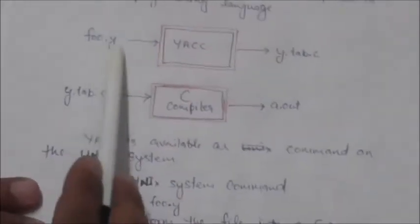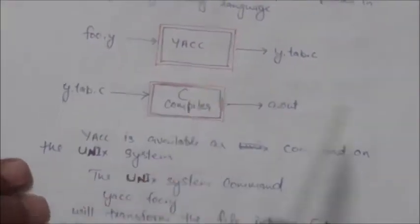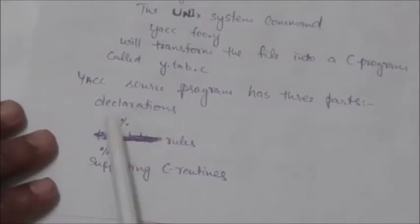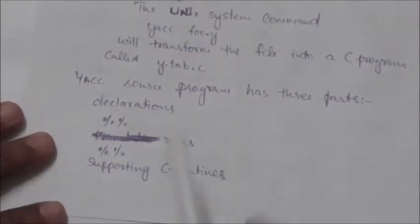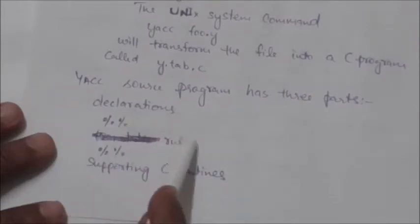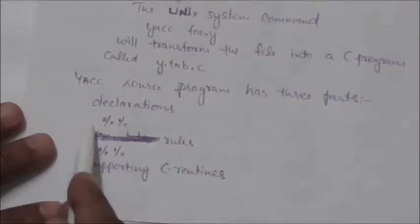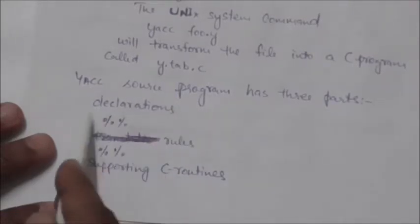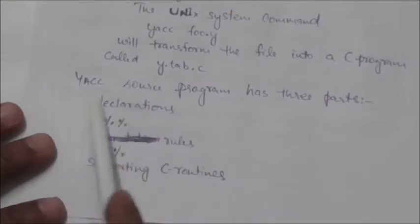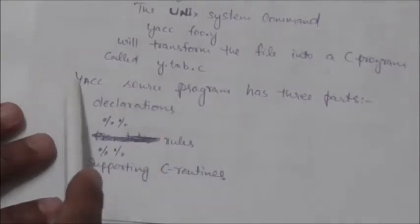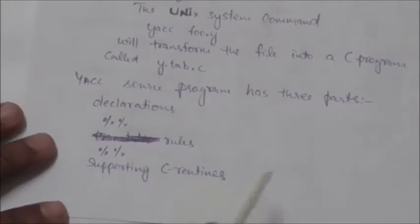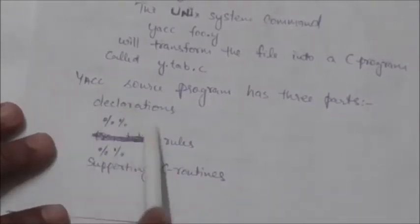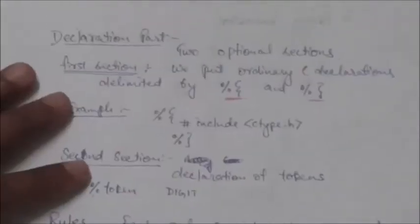The source program taken as input by the YACC tool has three parts. The first is the declarations part, the second part is rules — which are enclosed in double percent (%%) symbols — and the third part of the source program is supporting C routines.